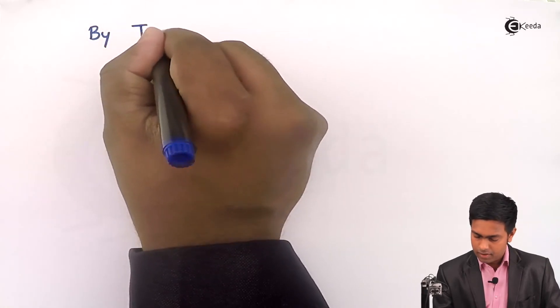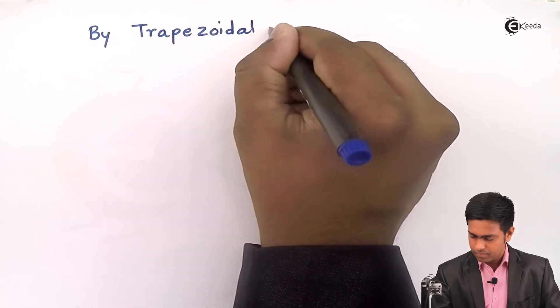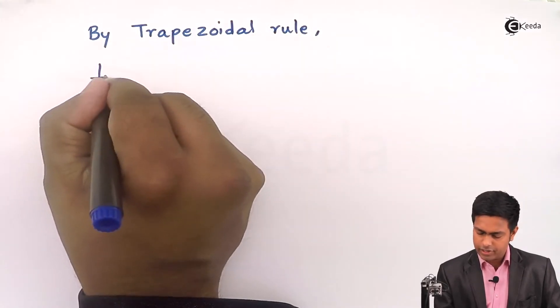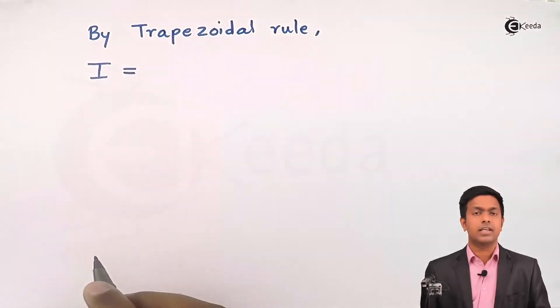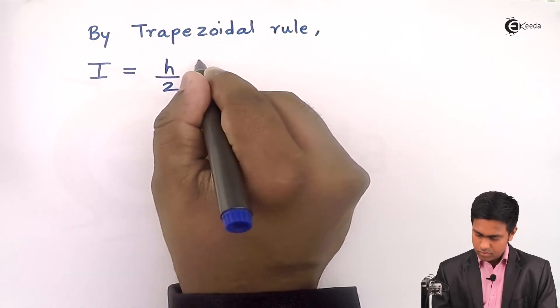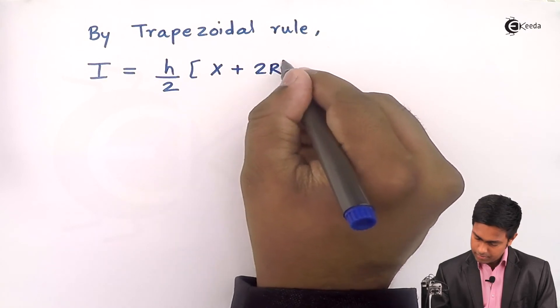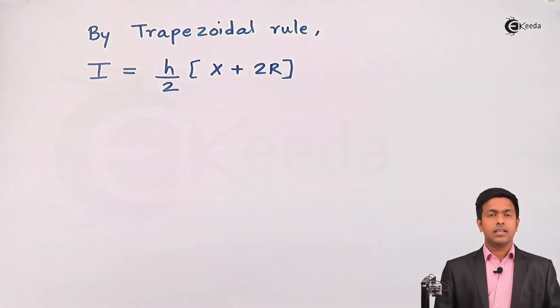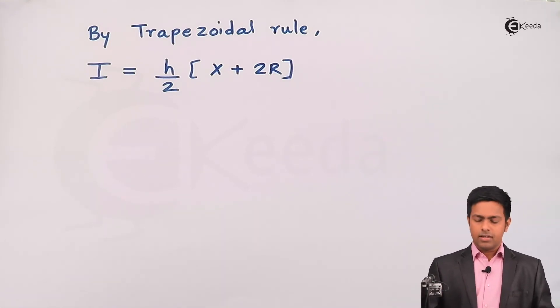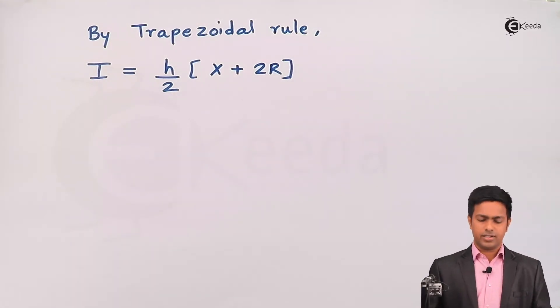So here I'll say by trapezoidal rule the value of integration or I is given as h upon 2 into X plus 2R, where h is the difference between any two intervals or any two values of x, then capital X is the sum of extreme ordinates.